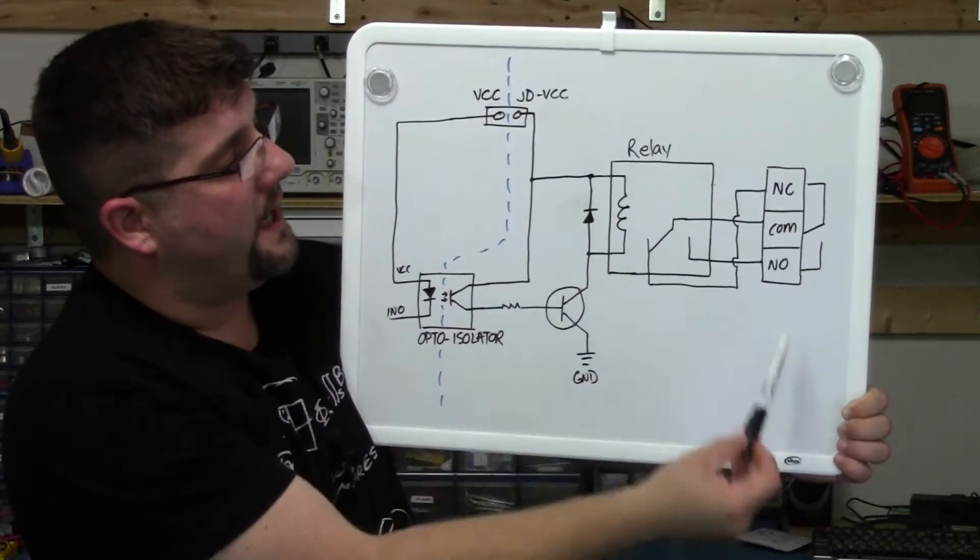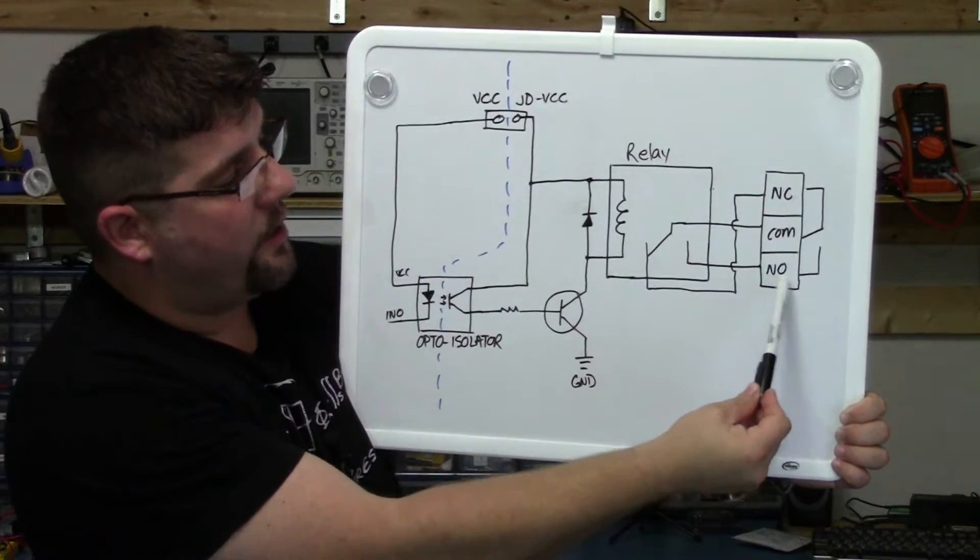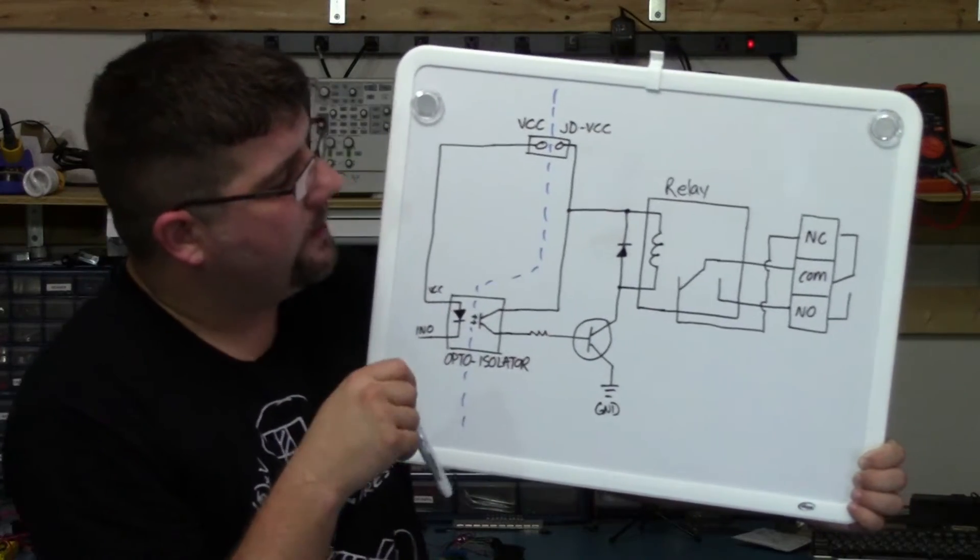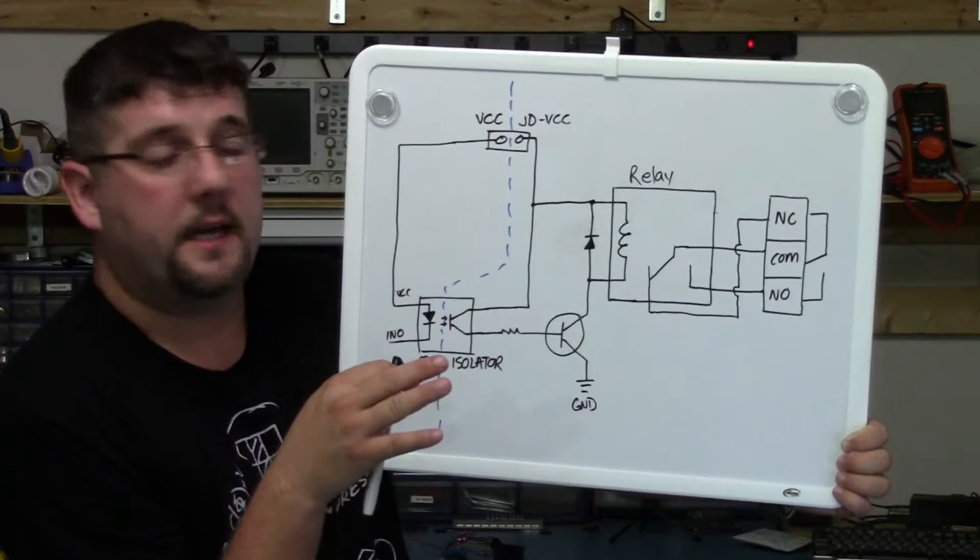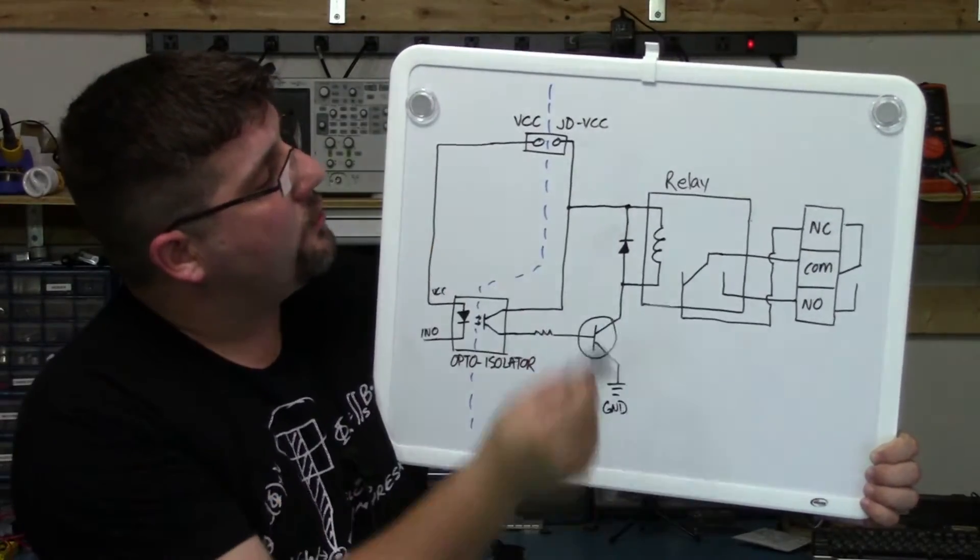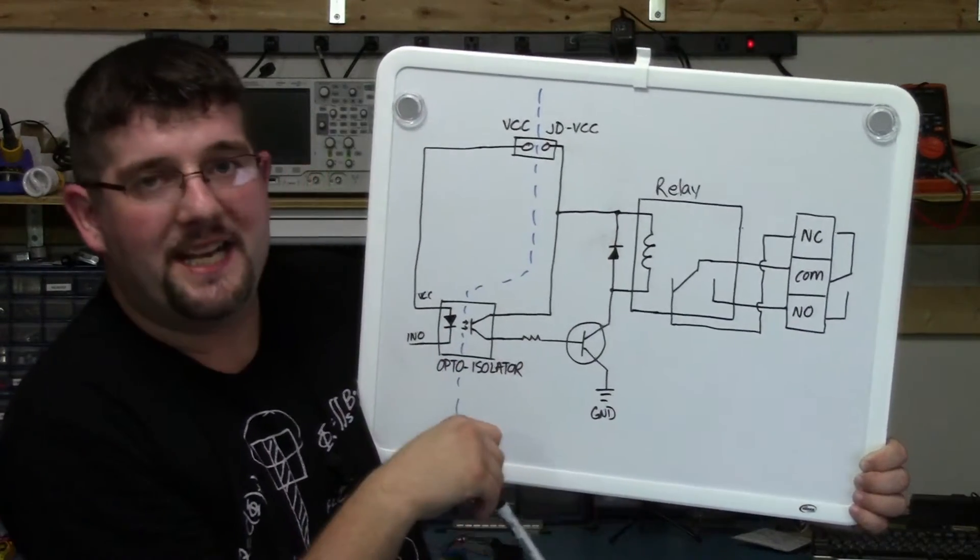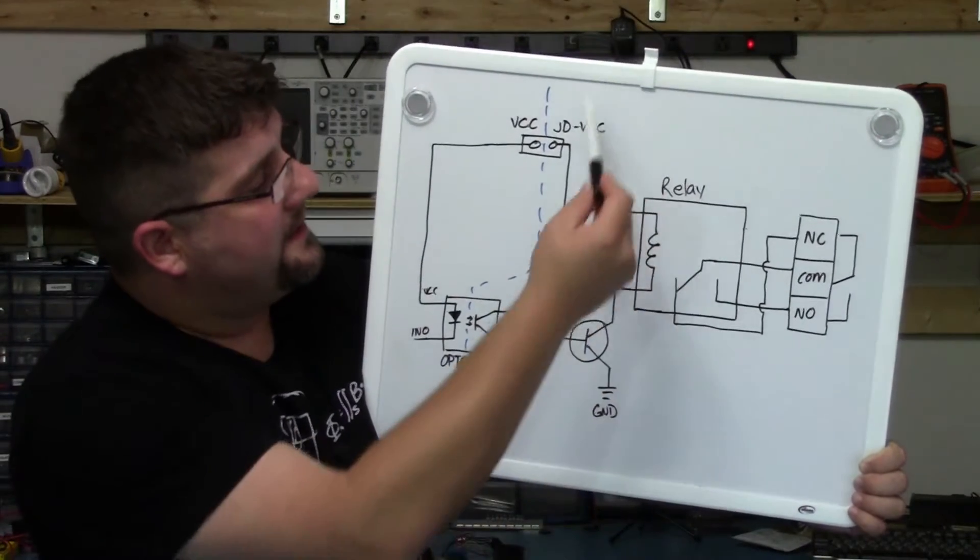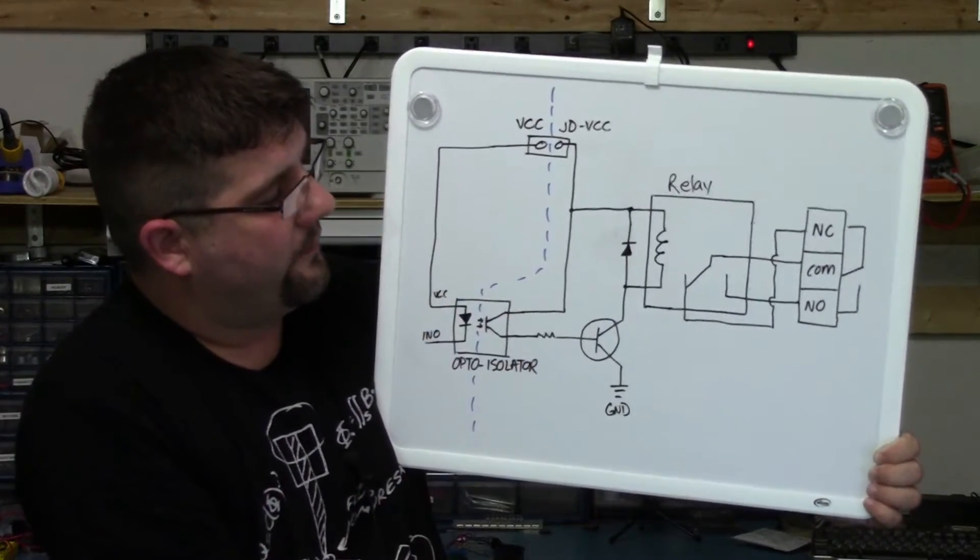And then of course on the load side we have our normally closed, our common connection, and our normally open connection. So what's happening when we hook up our Arduino and an external power supply and try to get everything working? Well, if we have an external power supply, we're going to connect that external power supply, 5 volts, positive side to JDVCC, and the negative side, the return side to ground. That is the power that's going to be used to drive the inputs of this relay, our positive side and our negative side of the relay.